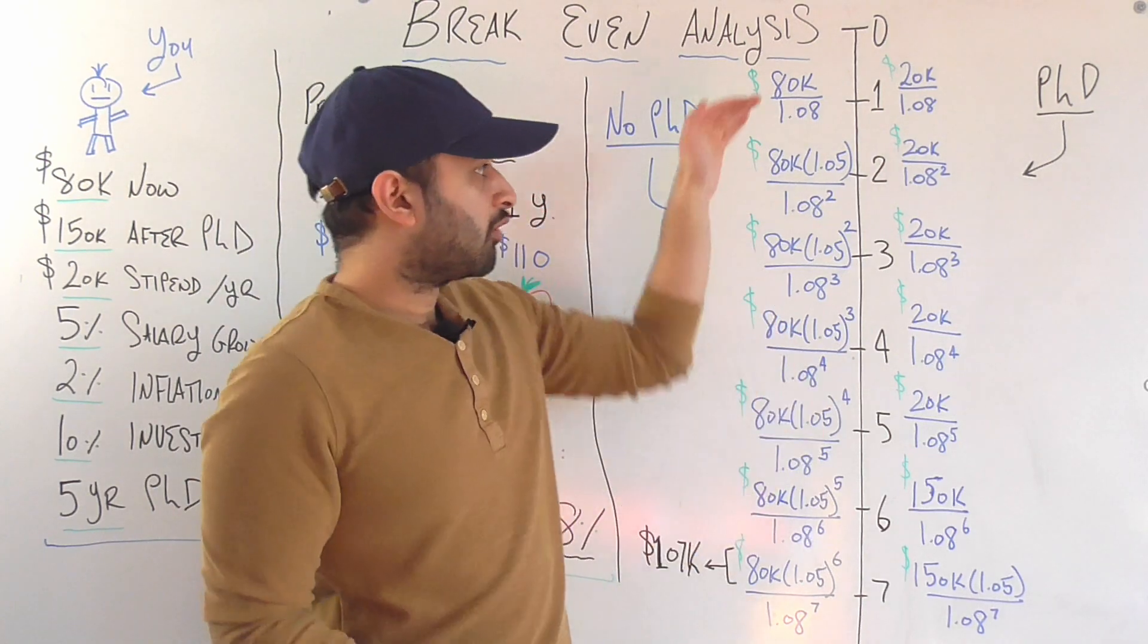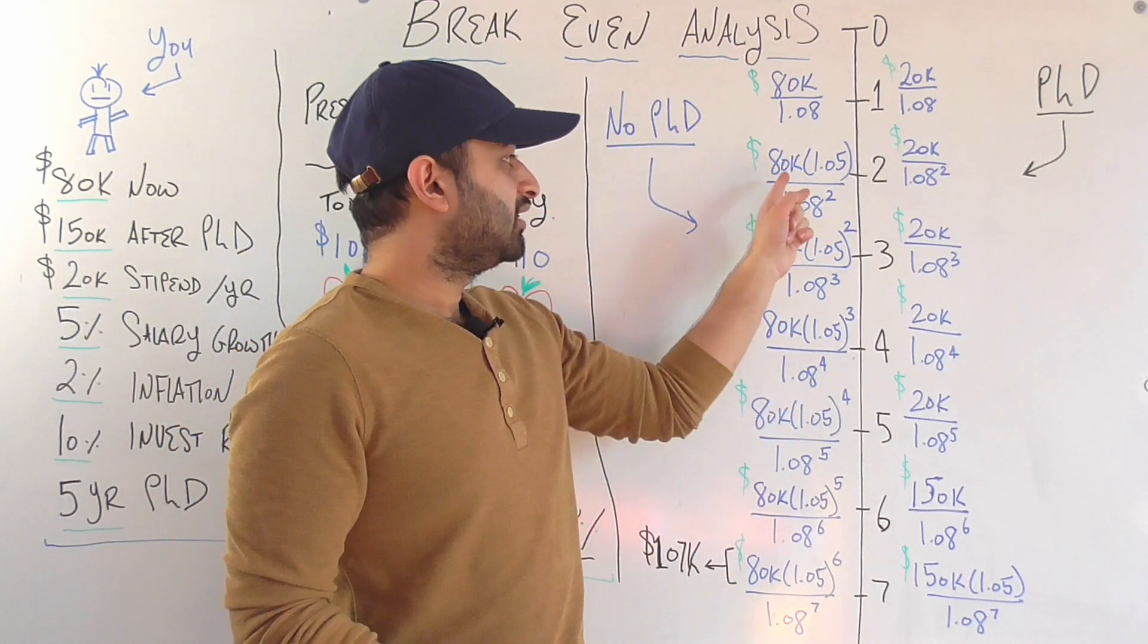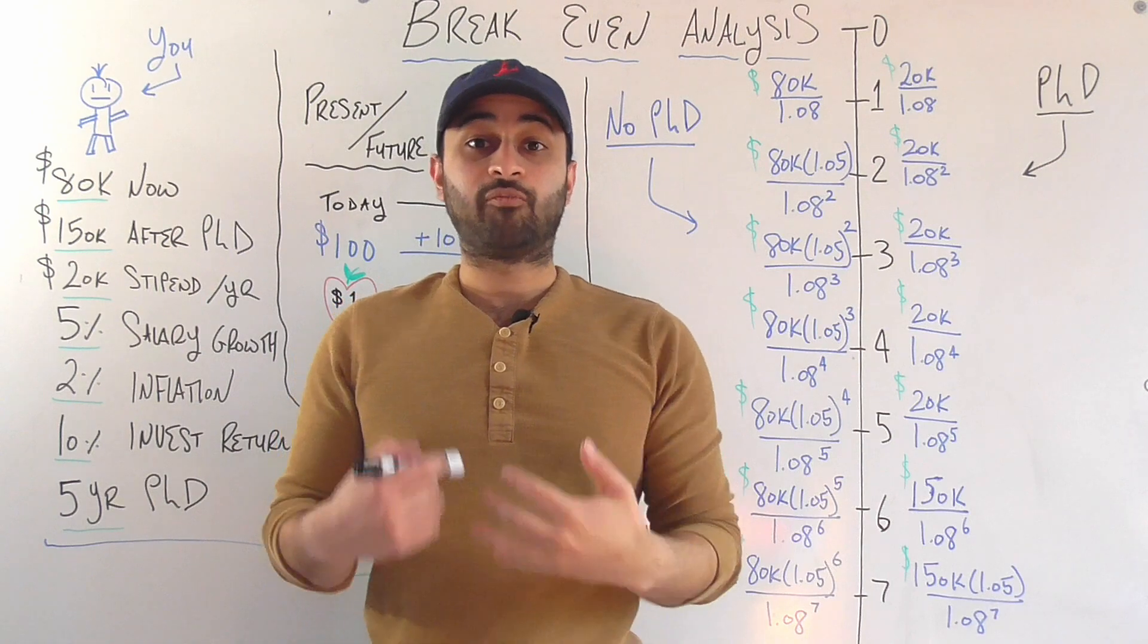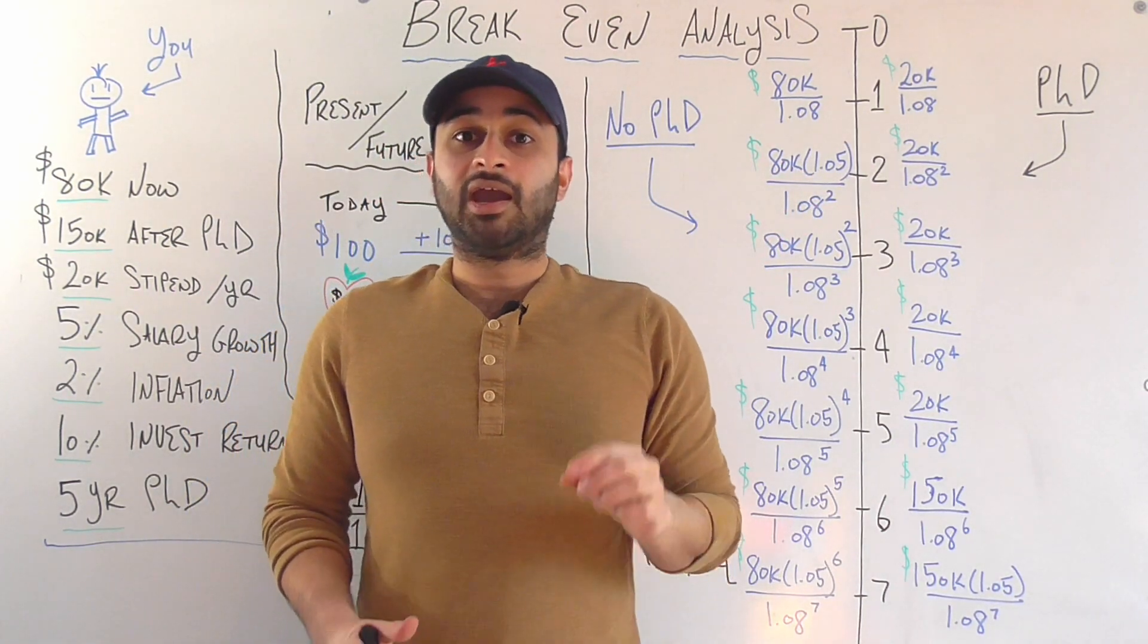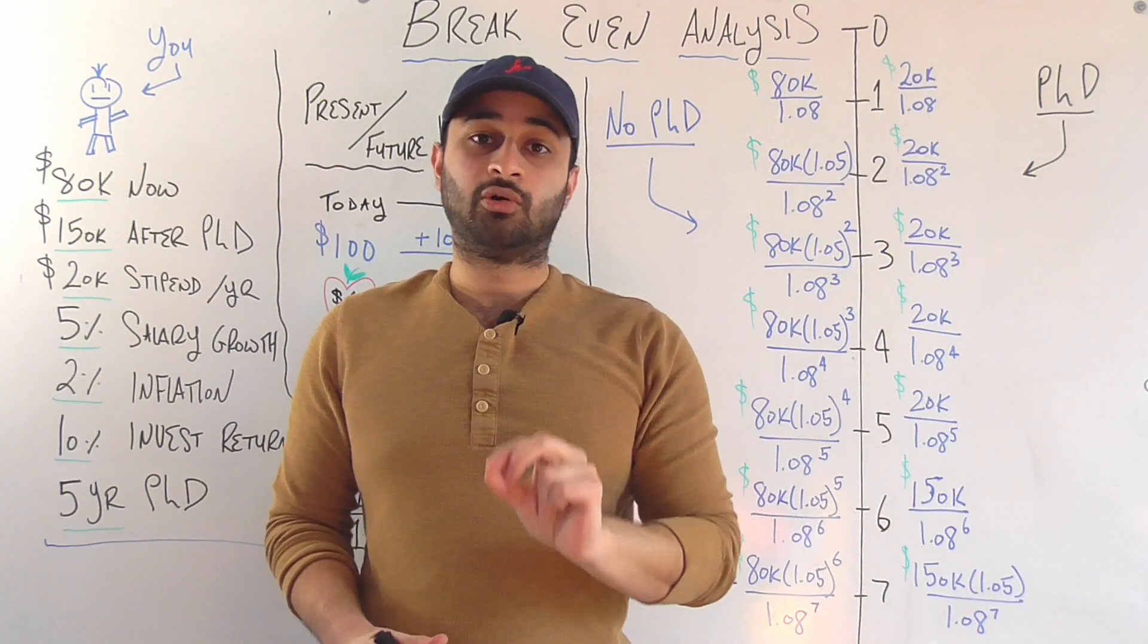Now let's go one year forward. The second year is going to be 80,000. Now we're going to get a 5% raise on the 80,000, so I multiply that by 1.05. And then I need to divide that by 1.08 squared.